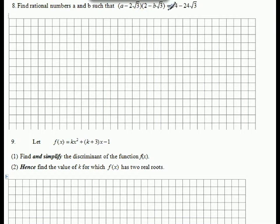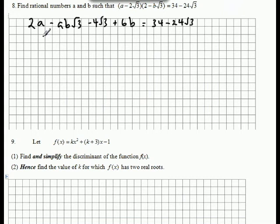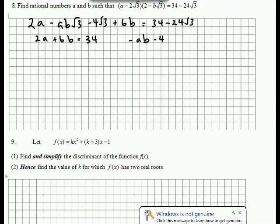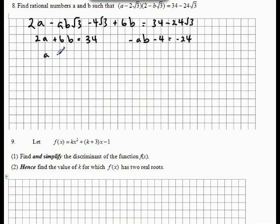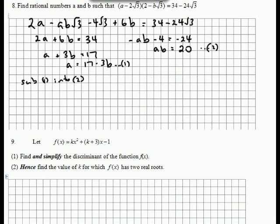Question 8 is a matter of expanding and then equating left side with right side. Expand the brackets and we end up with this equation. Now equating terms — the non-surds: 2a plus 6b must equal 34, and minus ab minus 4 equals negative 24. This one we can divide everything by 2 to simplify. I'm going to get a by itself — move the 3b across. Call that equation 1. The other equation simplifies to ab equals 20 — call that equation 2.